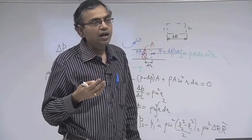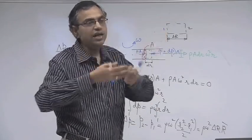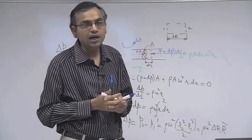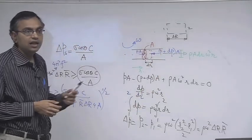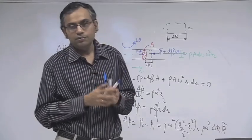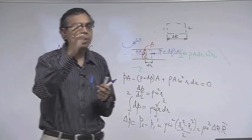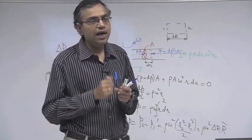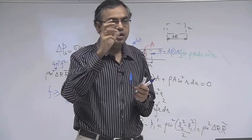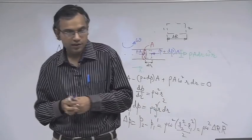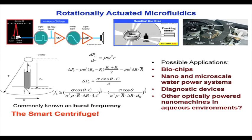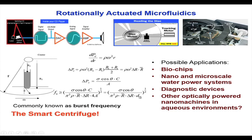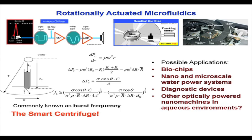This is why you want micro channels on the CD — to utilize the interplay between centrifugal pressure differential and surface tension, which is important only at small scales. The CD can act like a smart centrifuge: depending on rotational speed, you can start a particular flow. In the final expression, 4·A/C is written as the hydraulic diameter D_H — just an alternative way of expressing the same parameter.